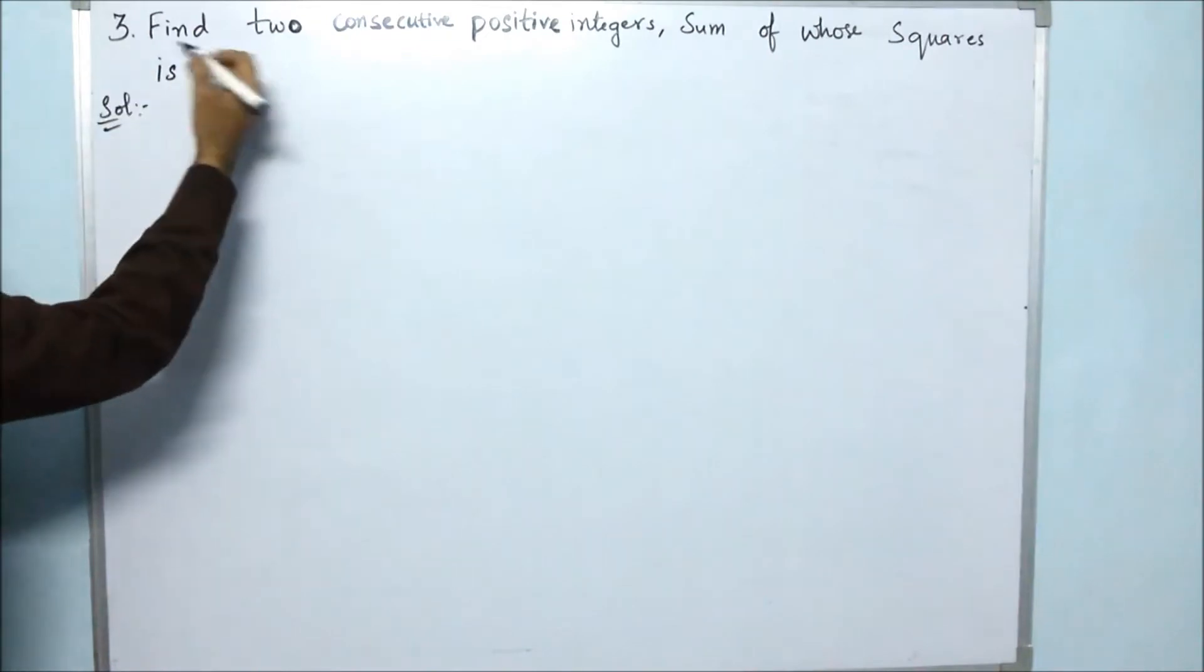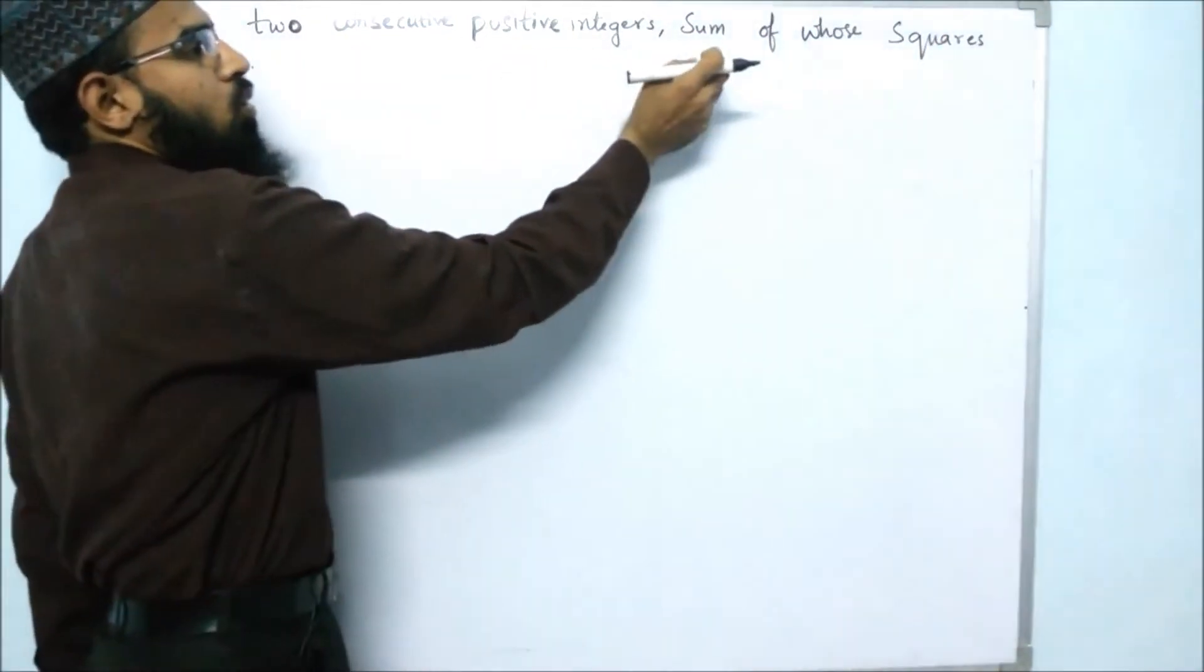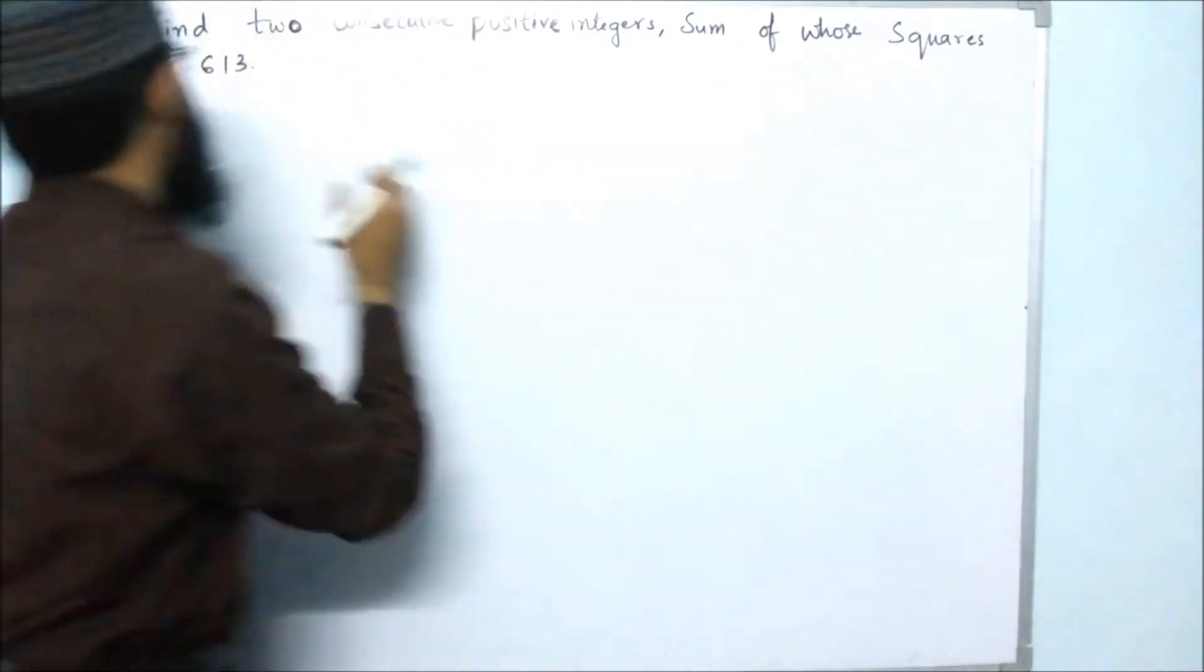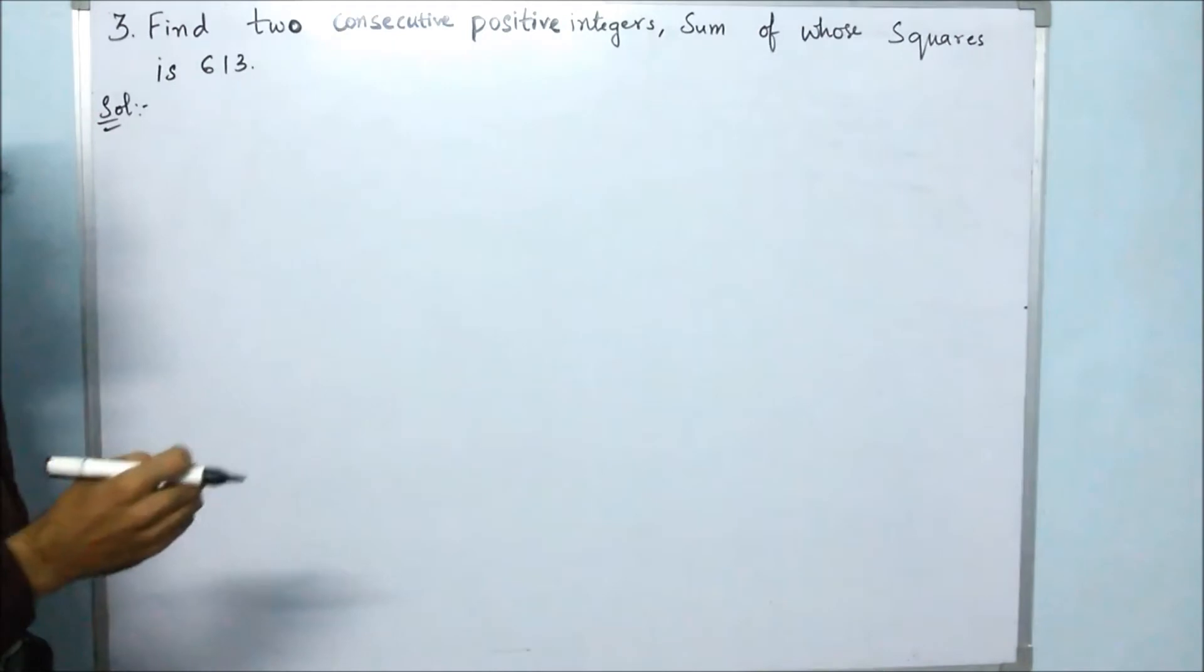In the third problem, they said find two consecutive positive integers whose sum of squares is 613. So we don't know the consecutive integers.